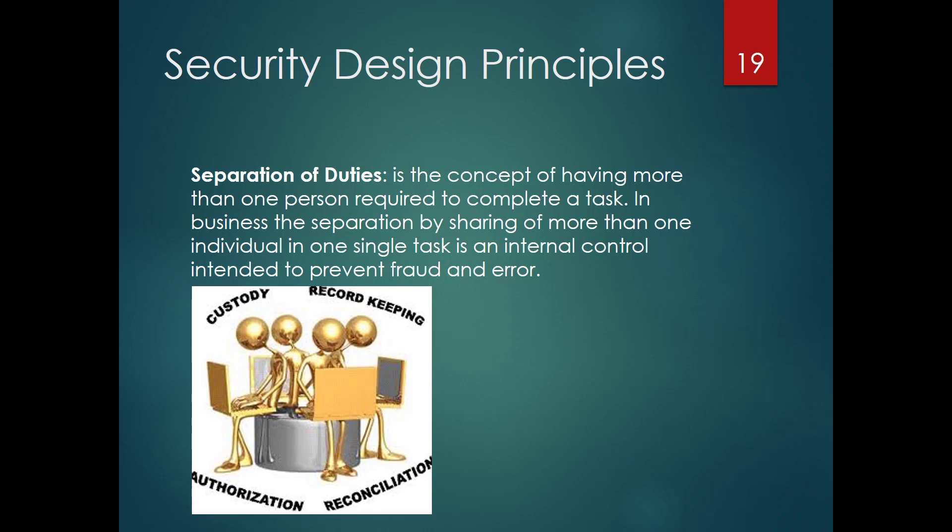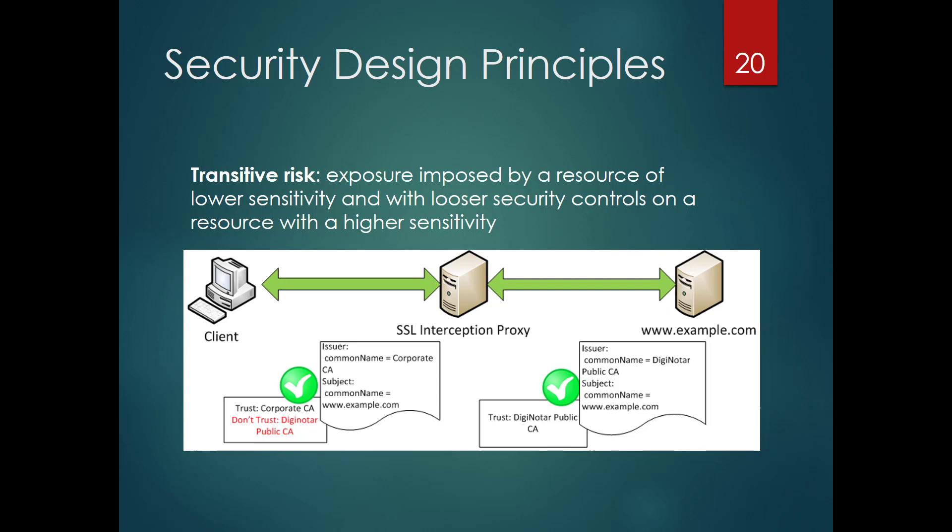Let's talk about transitive risk. The idea is you must look at your overall system and all its components to see whether someone involved has lower security that then induces their lack of security onto your system. A great example is the Target breach: there was a vulnerability in a third party connected to a point-of-sale device, and that transitive risk was transmitted from the third party to Target. The news stories focused on Target because Target inherited that risk from the third party.